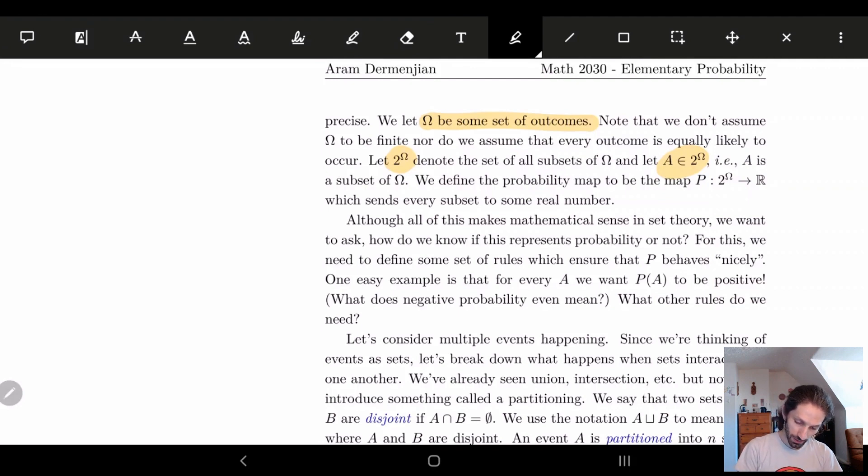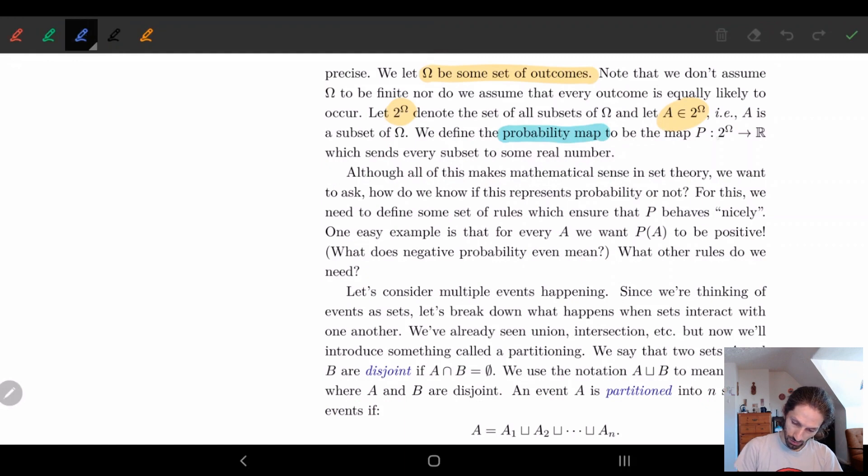And we're going to define the probability map. So here I'll do this in blue. The probability map is going to be the map where we go from some event, from some subset to the real numbers. And that's basically what we've been doing, right? When I say the probability of flipping a coin to heads, that was one half. I sent it from an event, a subset to a real number. Now the question becomes, okay, I can do this for arbitrary things, but not everything is going to give me a probability. When do I have a probability, something nice and simple? And so that's basically what we're going to be looking at next.